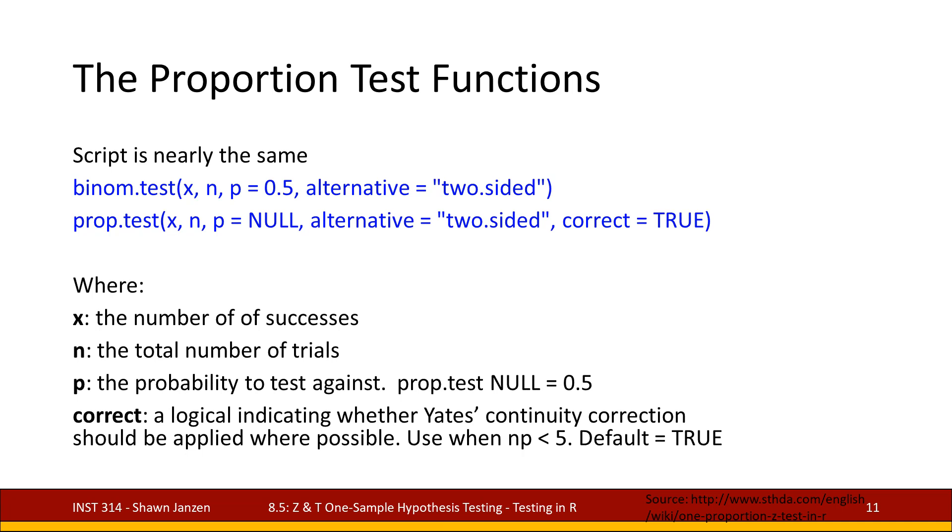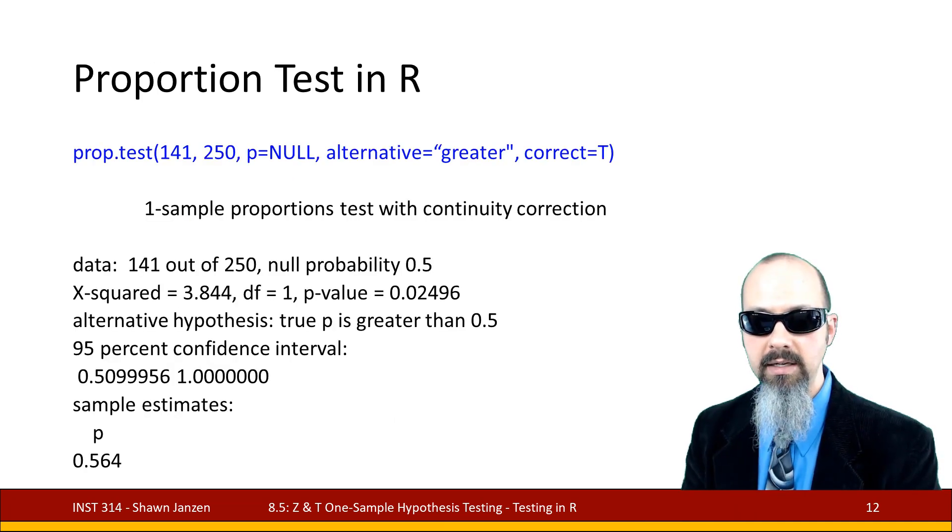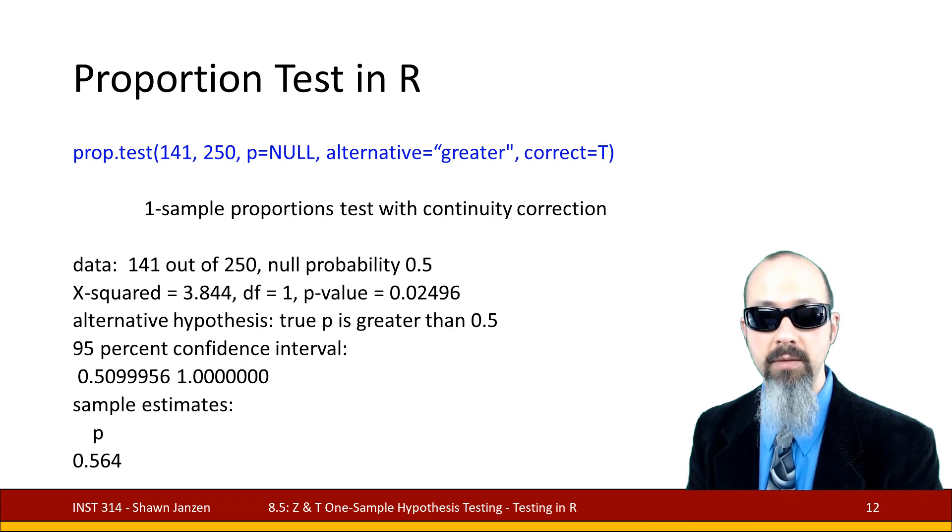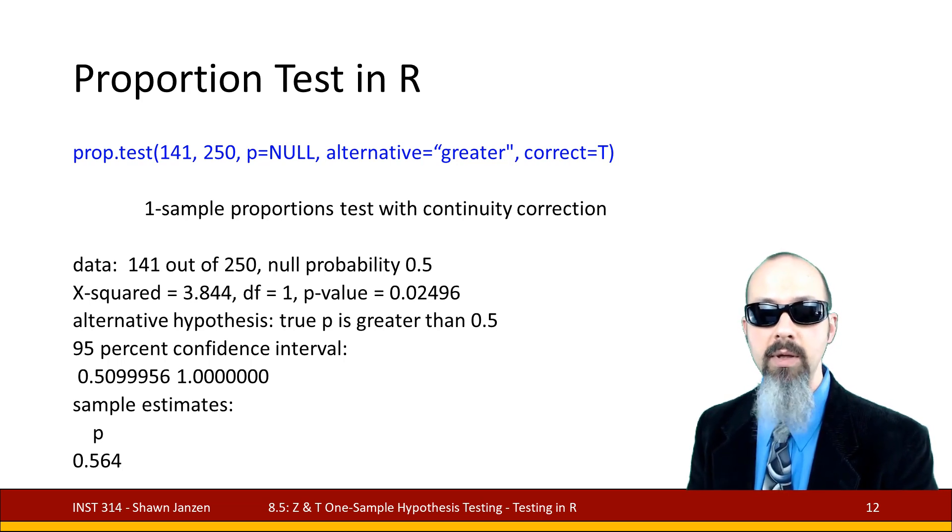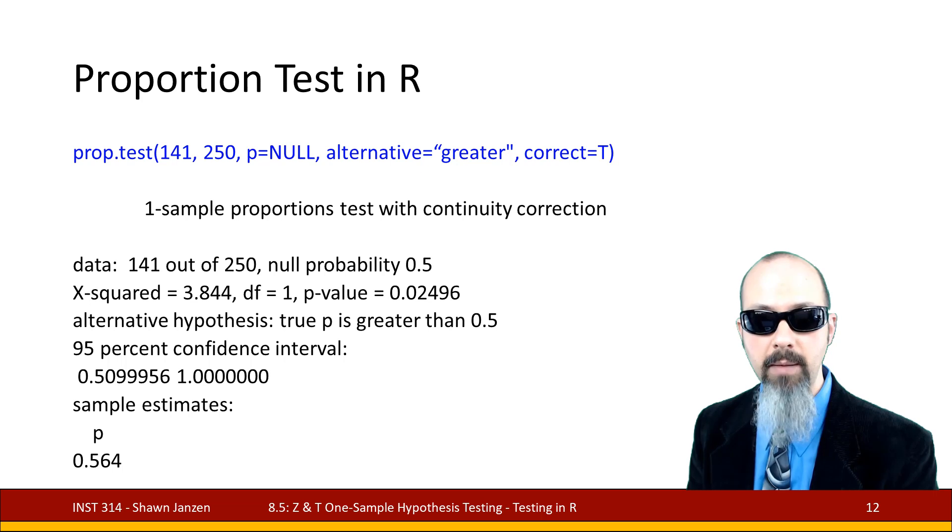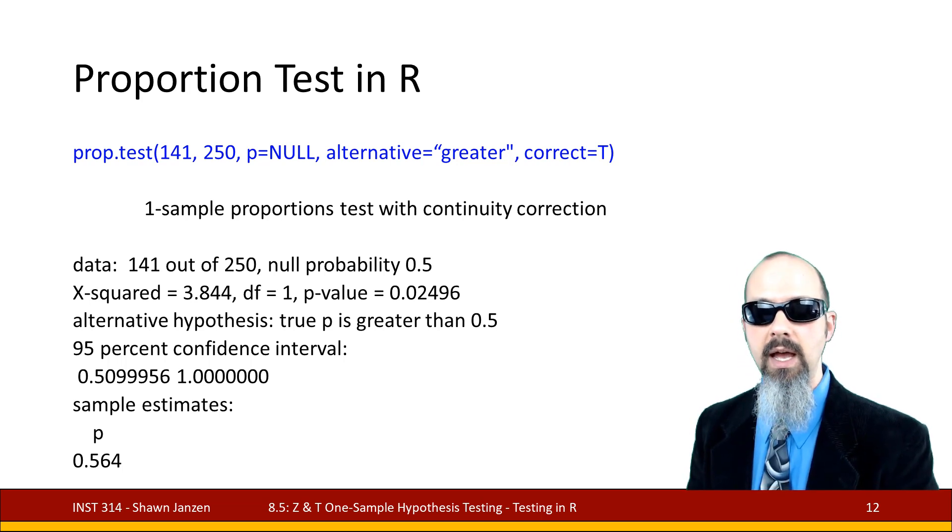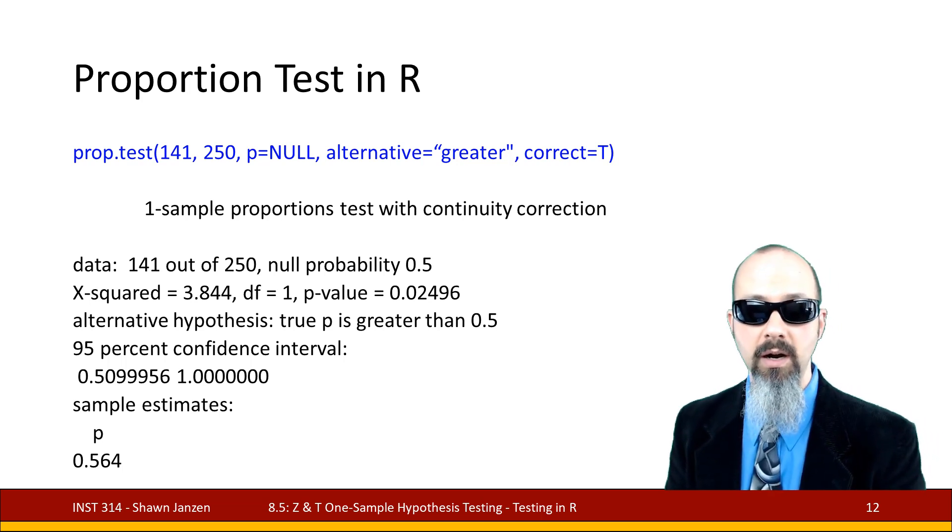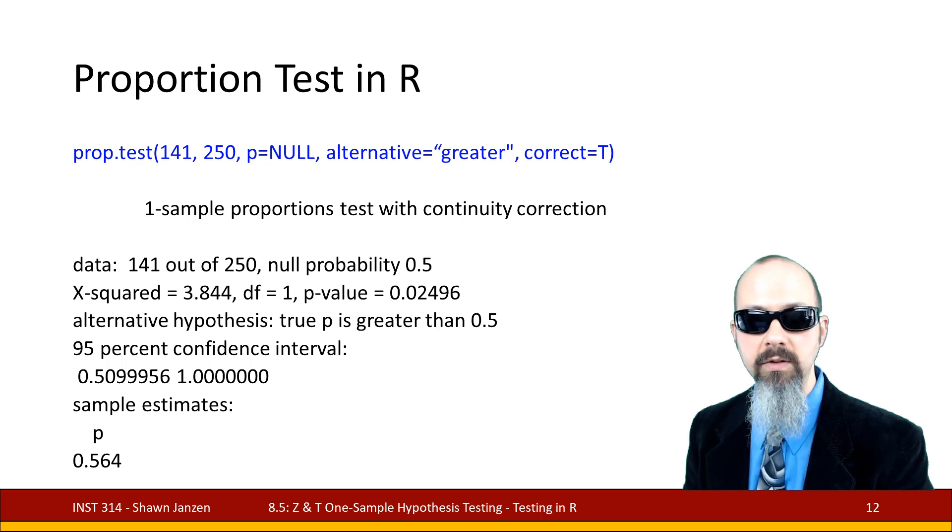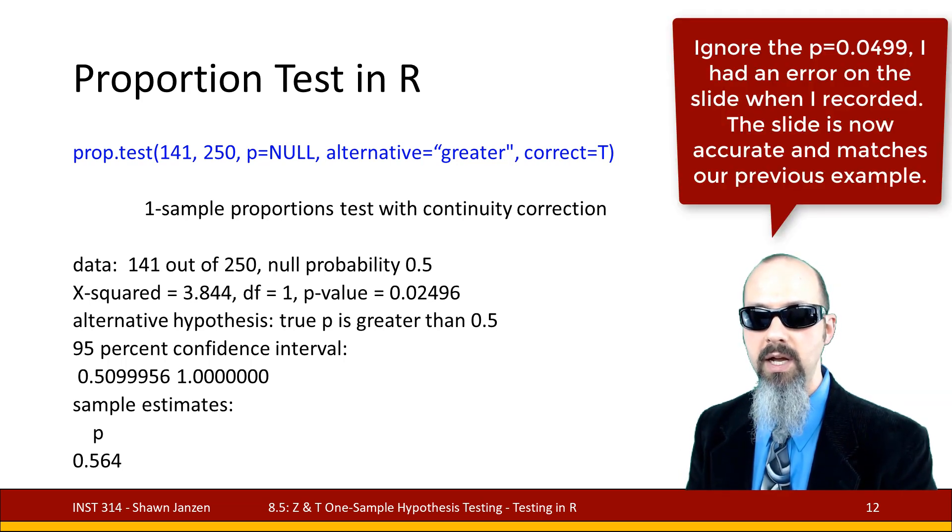So if we wanted to set up some of these for the prop.test where we did the example before with the Maryland voters, I'm using the 141 individuals as the sample that said they were going to vote, comma 250 is the n value. p in this case was null, I'm not specifying a null probability because I want it to equal 0.5. If you did want to match it against some different population parameter probability, put that in here, otherwise it defaults to 0.5. And then it tells us our probability was the 0.564 that we calculated, it gives us an interval for it, and we get a p-value of 0.499, which is close to the one that we calculated by hand.